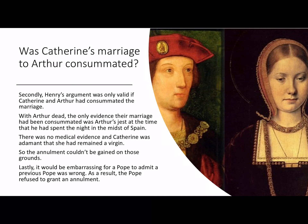Secondly, Henry's argument was only valid if Catherine and Arthur had consummated their marriage. As Arthur had died, the only evidence that they had consummated it was Arthur's jest at the time, when he said he had spent the night in the midst of Spain, along with the court gossip at the time. However, there was no medical evidence, and Catherine was adamant that she had remained a virgin. The annulment couldn't be gained on those grounds. Lastly, it would be embarrassing for a Pope to admit a previous Pope was wrong. As a result, the Pope refused to grant the annulment.